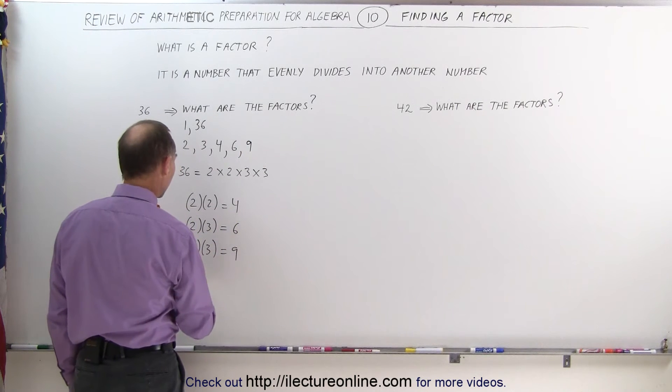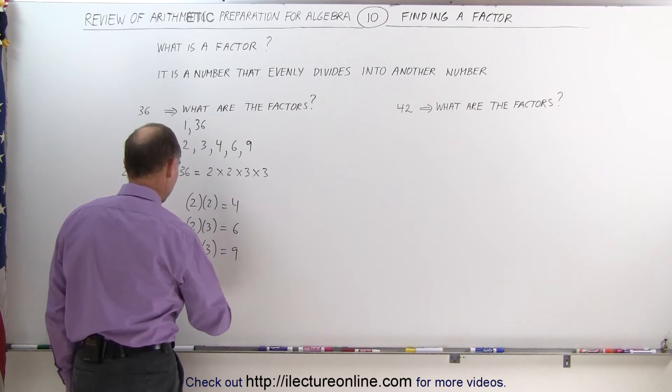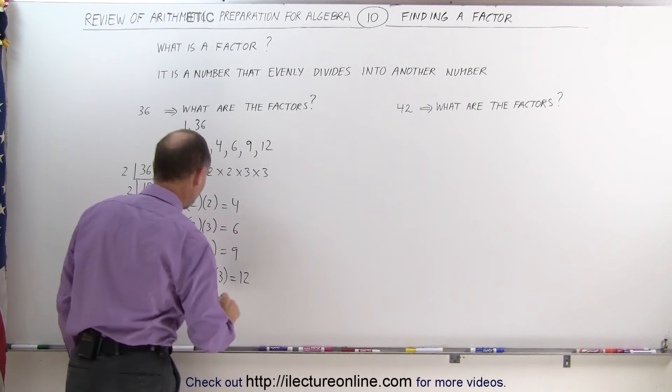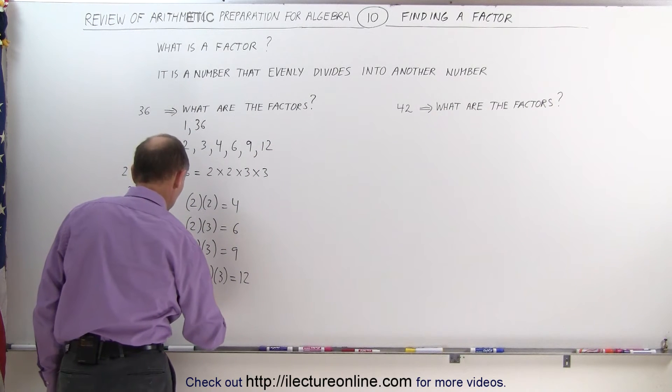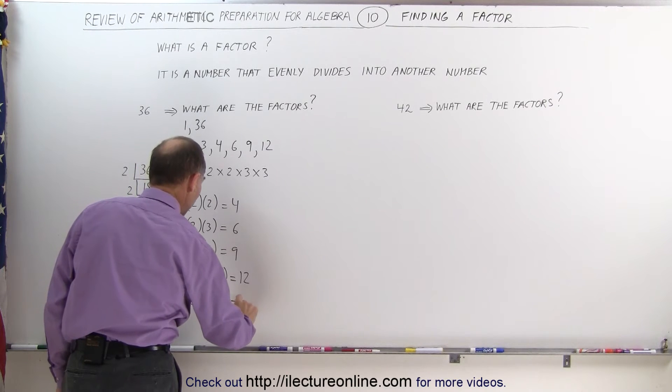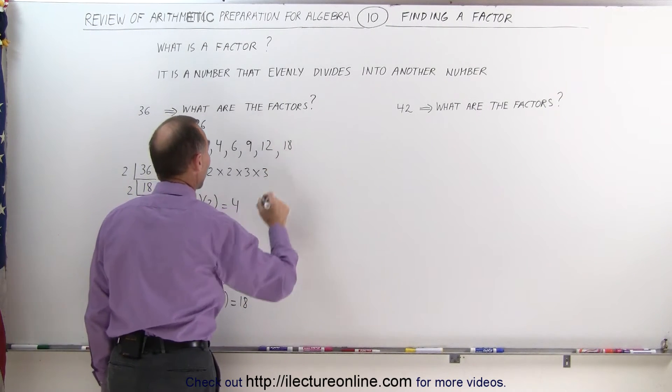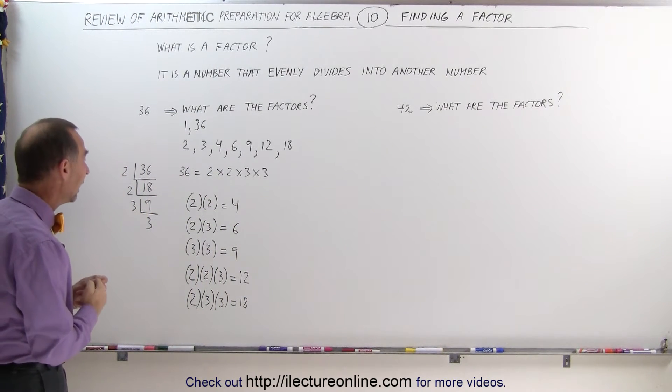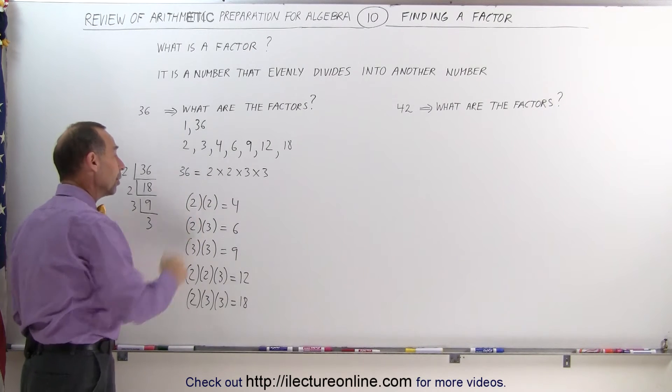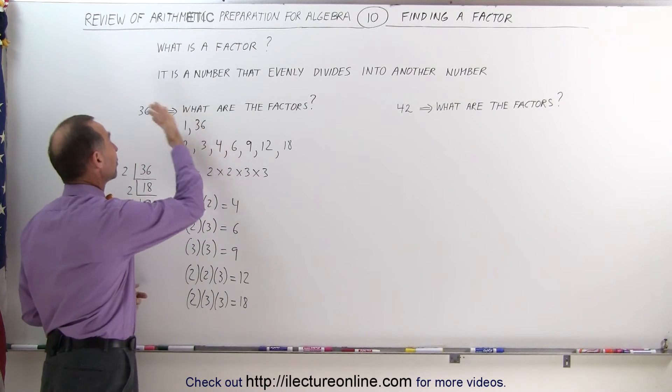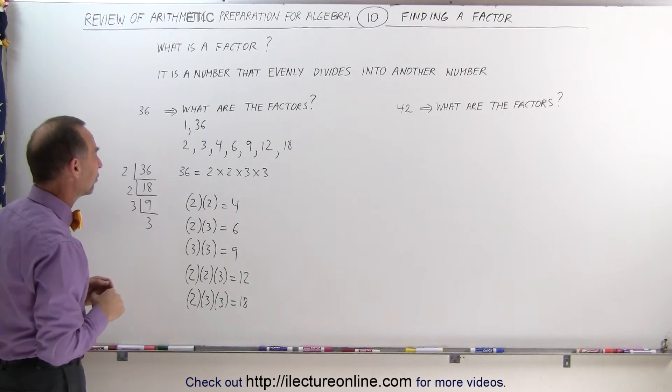And we can multiply 2 times 2 times 3. That's 4 times 3, which is 12, also a factor of 36. We can multiply 2 times 3 times 3, which is 18, also a factor. And now we've exhausted all the combinations we can multiply. Remember, when we multiply all of them together, we get 36, which is also a factor of 36.